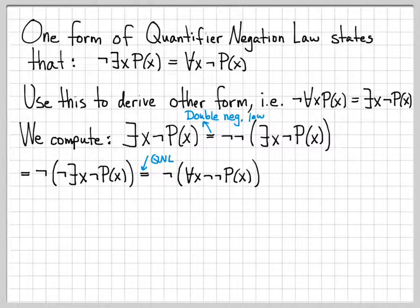The form of the quantifier negation law that we're assuming is true says if you have not there exists x and then a statement, that is equal to for all x and then not of the statement. So here my statement is not P of x. So I have to throw another not in front of it, I get not not P of x. So there I've used the first form of the quantifier negation law.